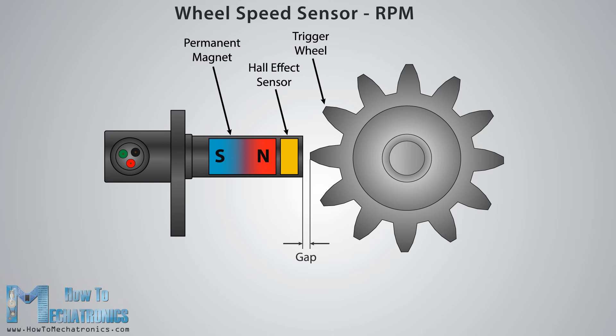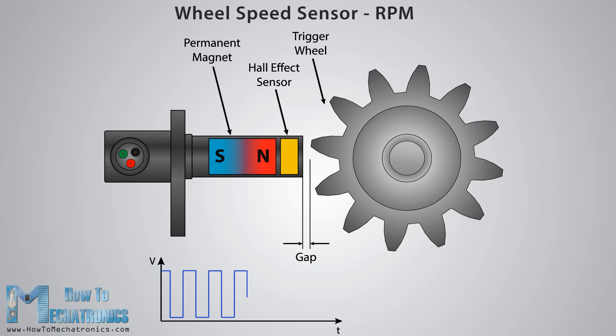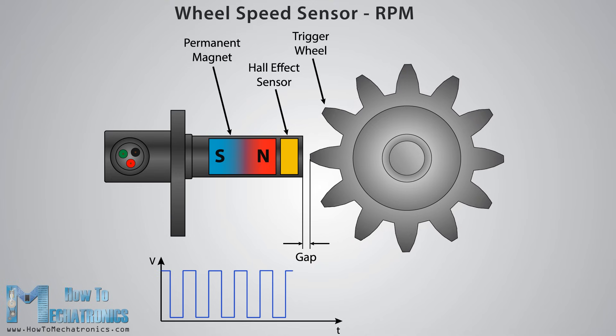The gap between the sensor and the teeth of the disc is very small so each time a tooth passes near the sensor it changes the surrounding magnetic field which will cause the output of the sensor to go either high or low. So the output of the sensor is a square wave signal which can be easily used for calculating the RPM of the rotating shaft.